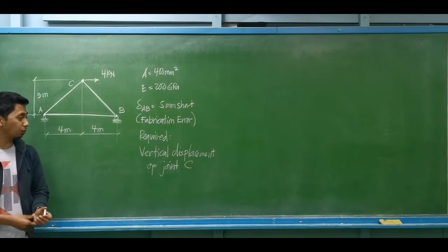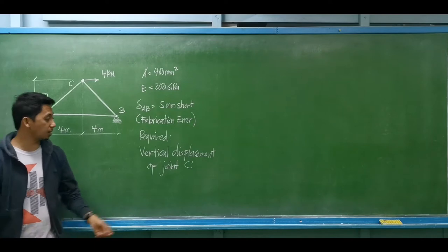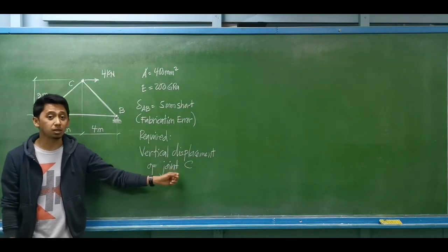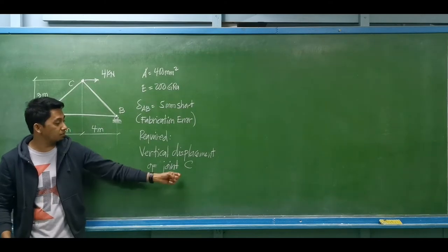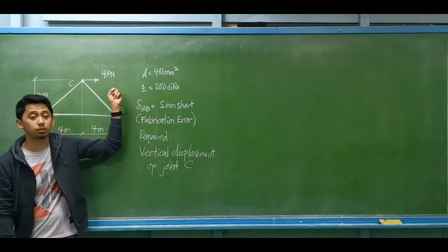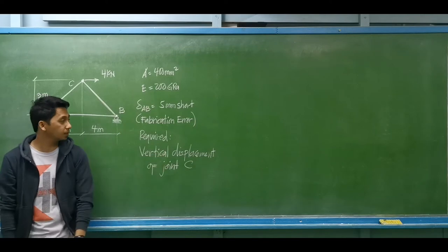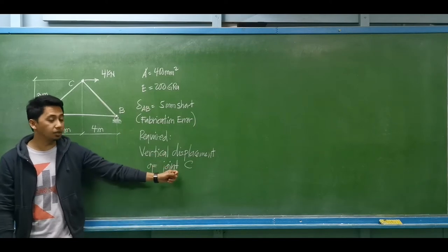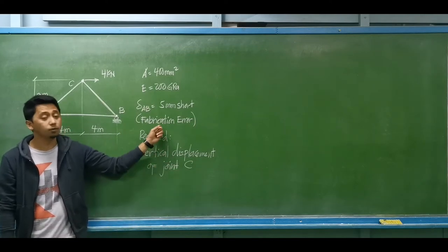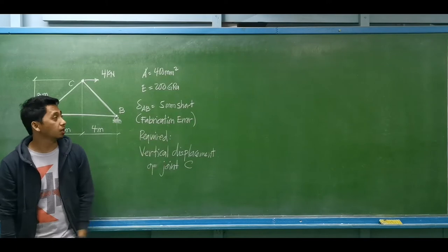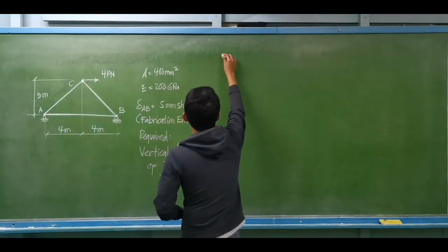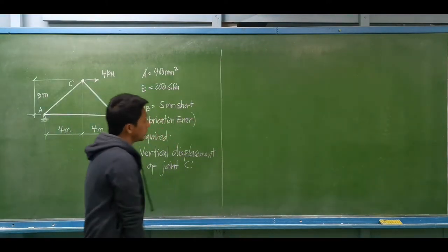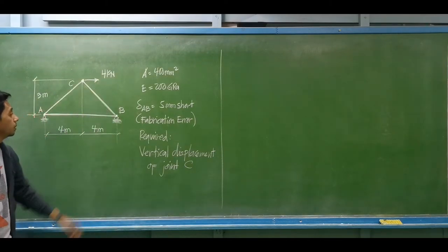Required: what will be the vertical displacement at joint C? We are considering two factors: the vertical displacement of joint C due to the load, and the vertical displacement of joint C due to fabrication error. First, we need to compute the actual force for all members due to the load.